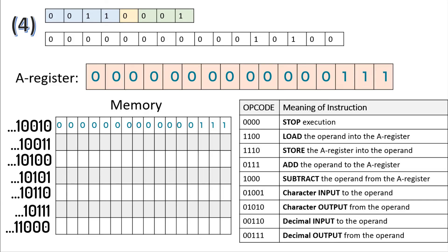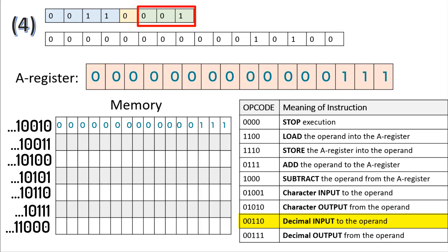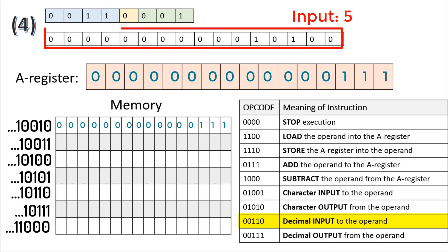The next instruction is 0011. This indicates a decimal input to the operand. The type of addressing mode used here is 001, which is direct mode addressing. This means that we're going to take a value from the user and put it at this particular location in memory.